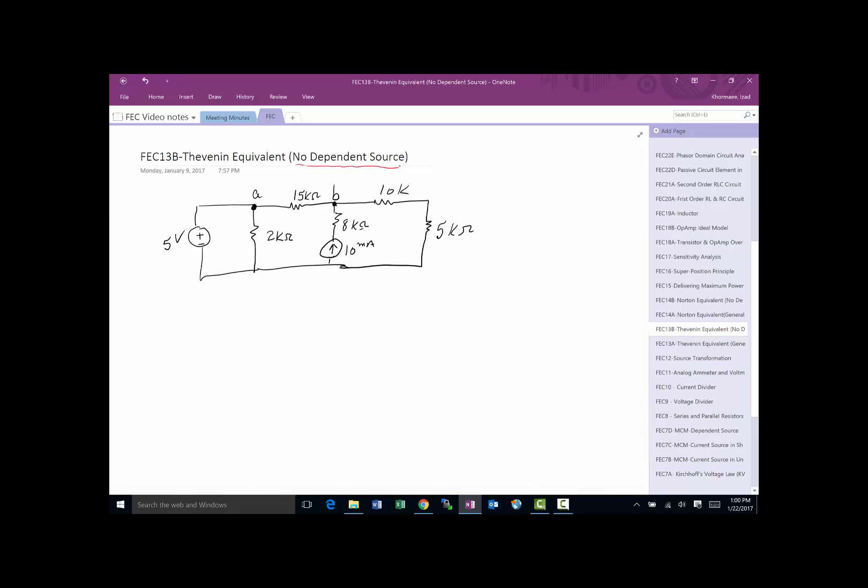Earlier, we had a video that talked about the general case where you could solve it for any circuit. In this case, we don't have any dependent sources, which allows us to simplify the steps, and instead of having to solve this once when the circuit is open, once again when the circuit is shorted, we can actually use a shortcut to find our Thevenin.